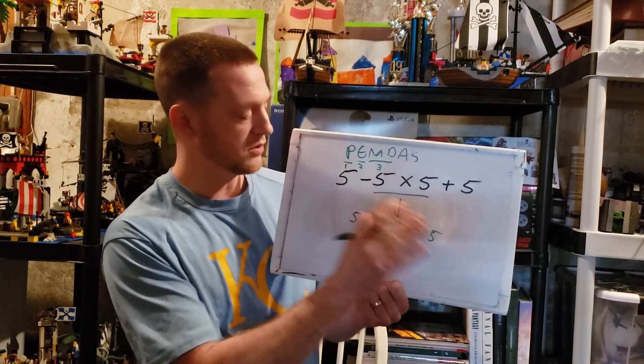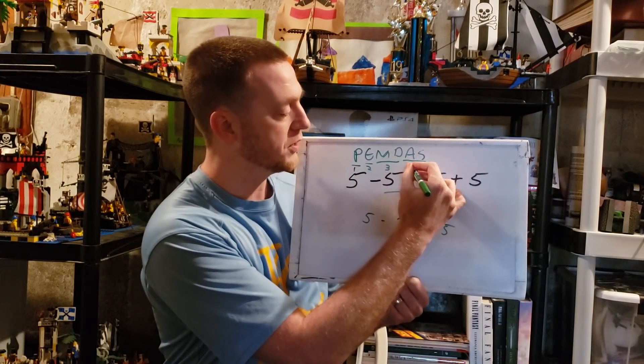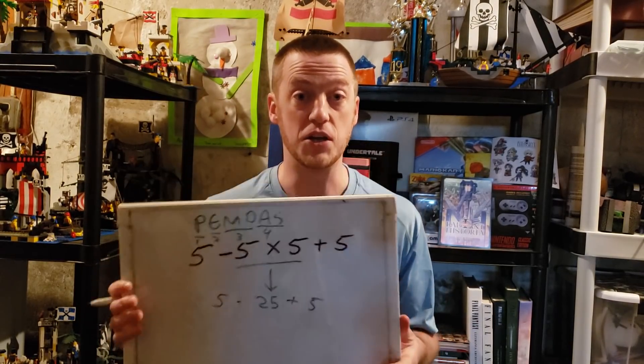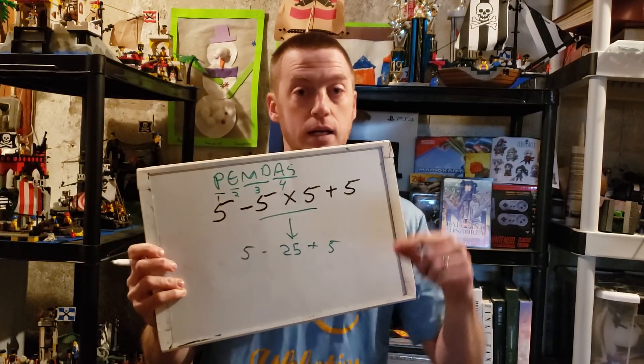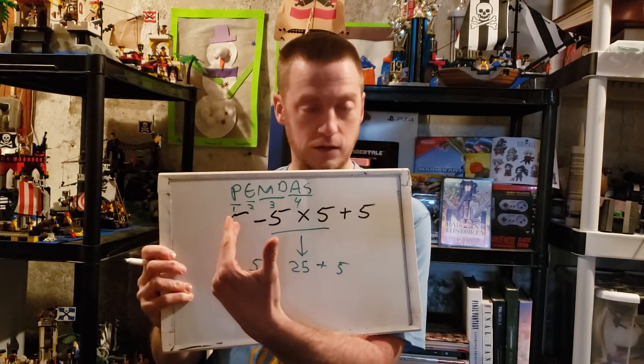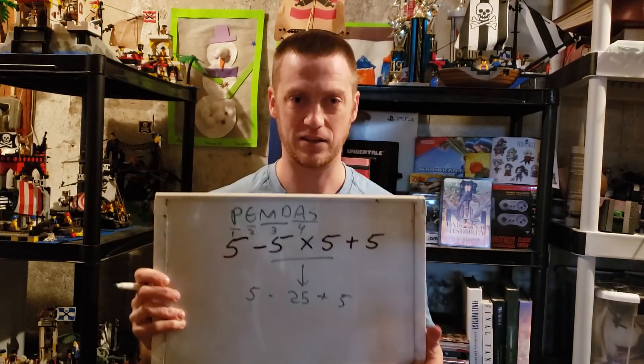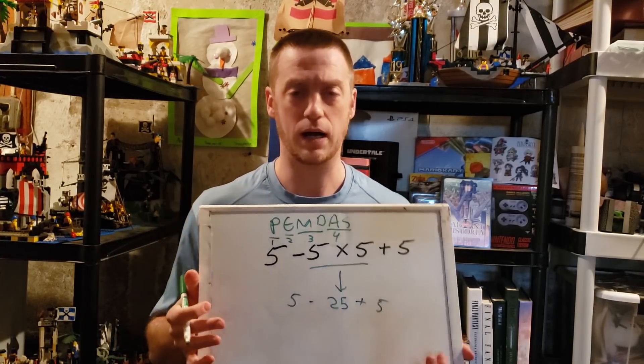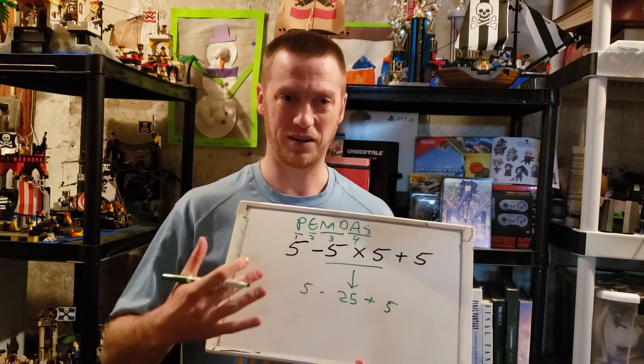Multiplication and division happened, there's nothing left. Now we're down to our three terms that we can add or subtract. Now that right here is the fourth step, and this is the reason why people get confused all the time about the order of operations. Addition and subtraction, they happen simultaneously left to right. You don't add before you subtract, you don't subtract before you add. They happen just basically by the order of the way it's written.